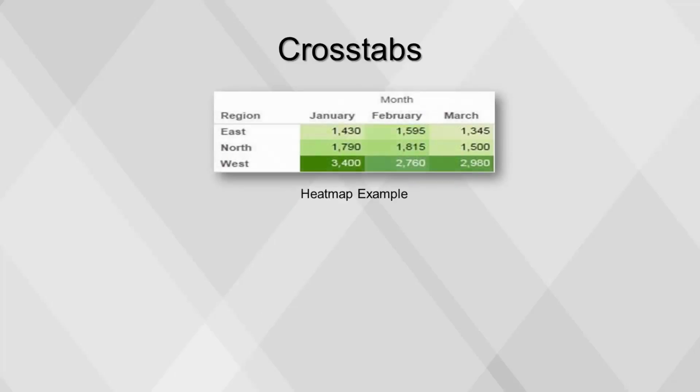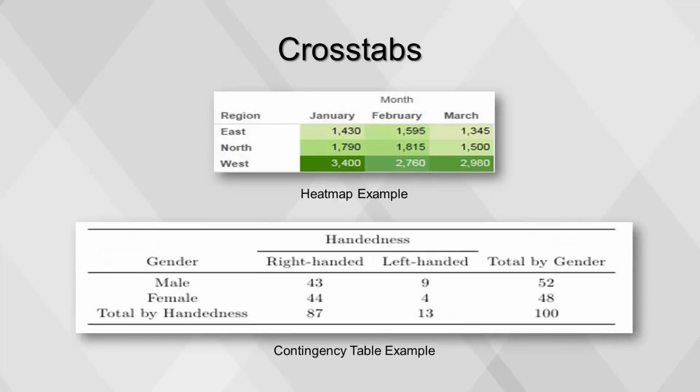Crosstabs are an effective way to summarize and present data as trends within the data are easier to identify. In data visualization, color is added to build a heat map. Crosstabs are also used in statistics to build contingency tables.